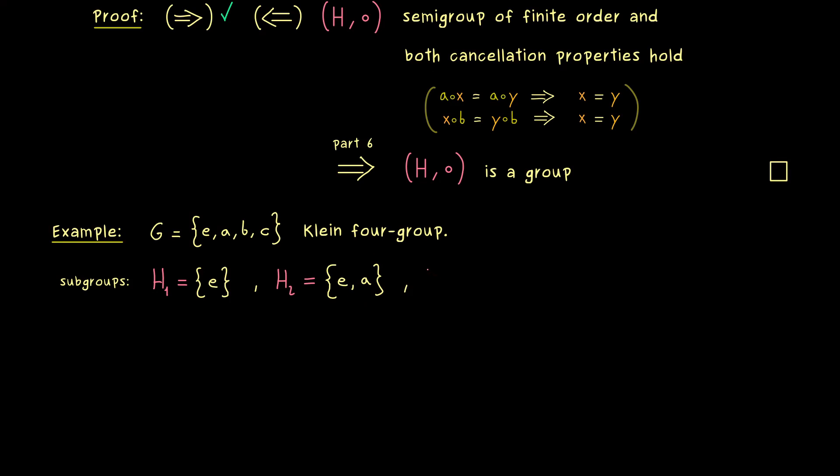This implies that we can also take B or C instead of A here. In other words, we get two more subgroups.